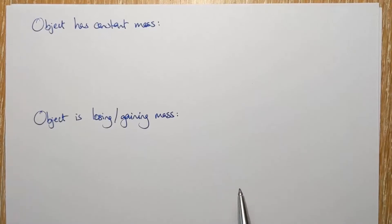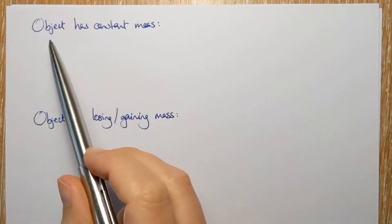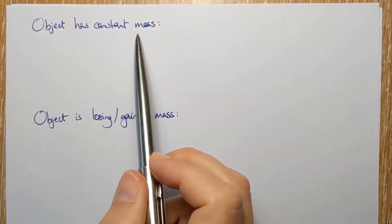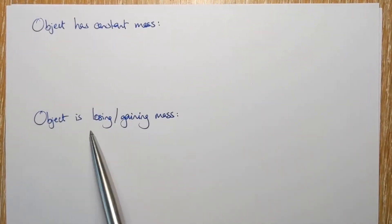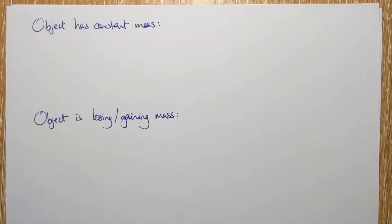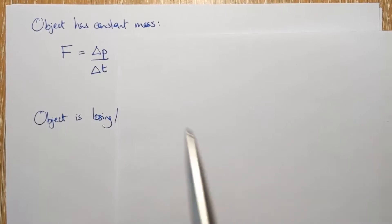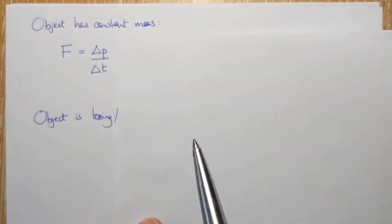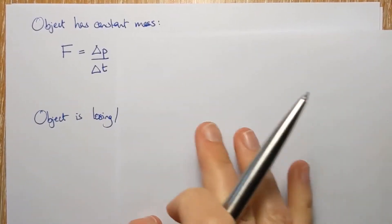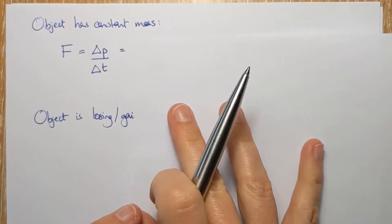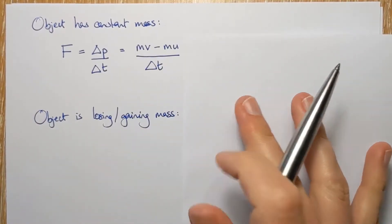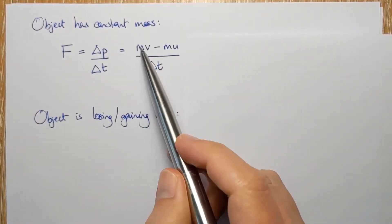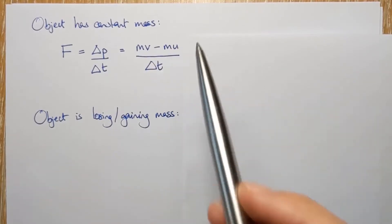And so now we're going to see what that looks like for an object that has a constant mass and for an object that is losing or gaining mass. So the change of momentum, the change of anything, is final minus initial. So the change of momentum is MV, final momentum, minus MU, the initial momentum.